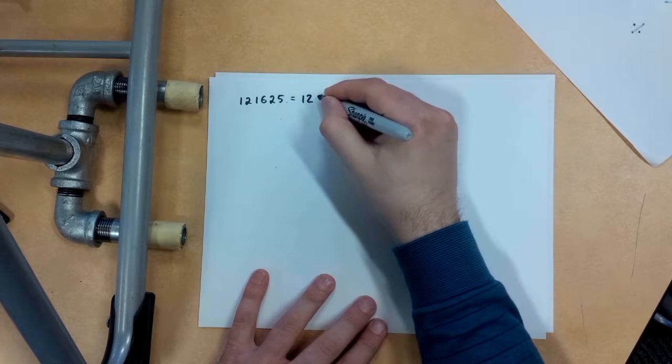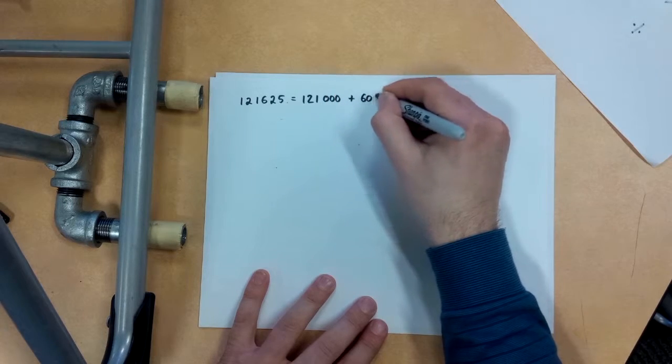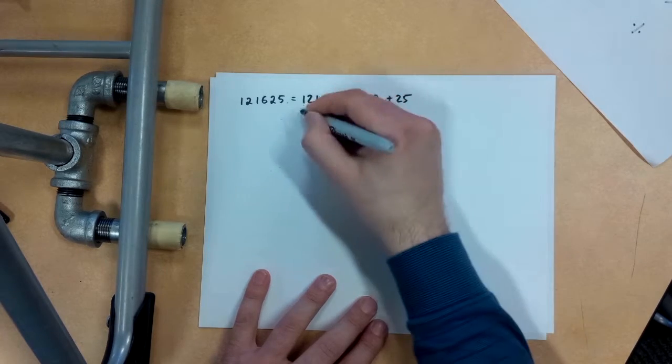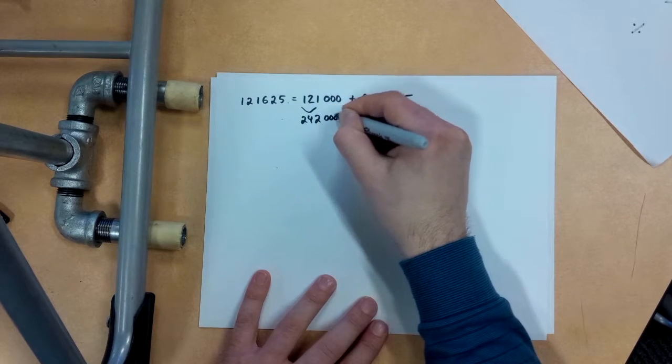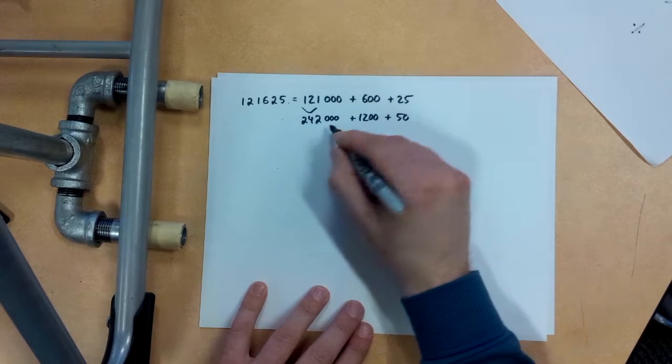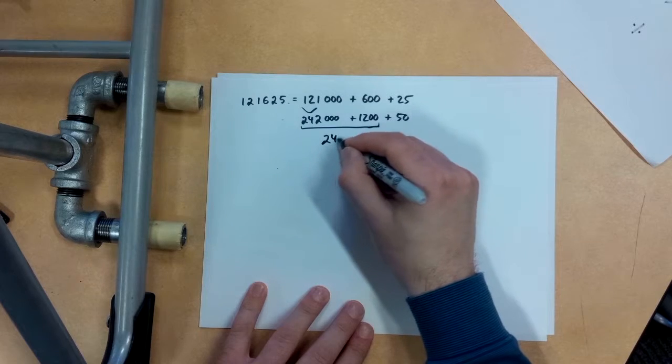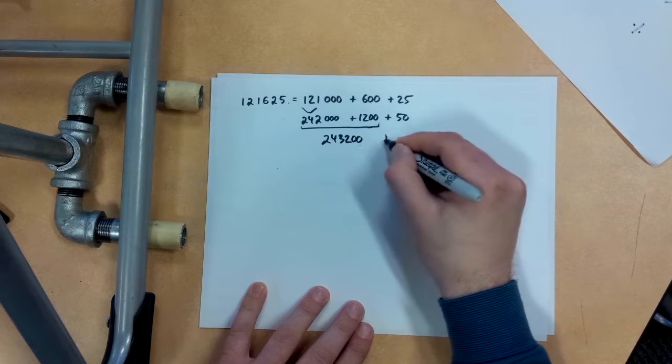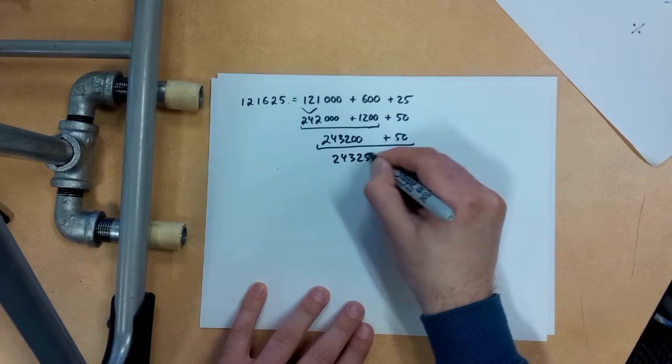I'm going to do this in chunks here. 121,000 plus 600 plus 25. I know that I can double this off by heart. Look, 242,000 plus 1,200 plus 50. So that's going to be 243,250.